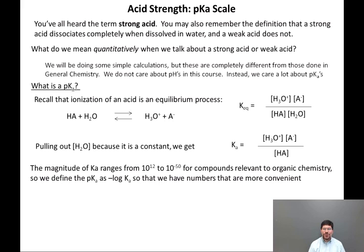The magnitude of Ka ranges between 10 to the 12th on the high end and 10 to the negative 50th on the low end for compounds relevant to organic chemistry. This is just a huge range. So we define the pKa as negative log of the Ka. That way we have numbers that are more convenient, numbers between negative 12 and 50. When referring to the pKa of something, we just say its pKa is 9, rather than its Ka is 10 to the negative 9.